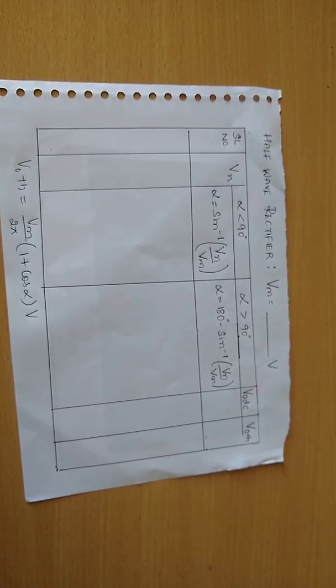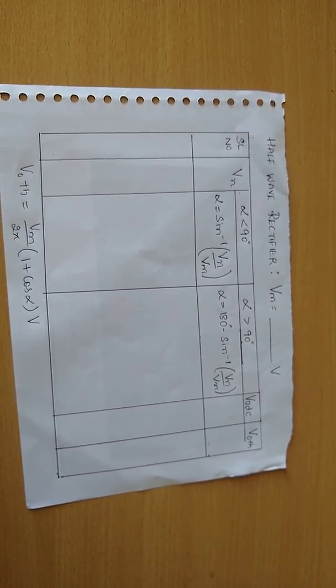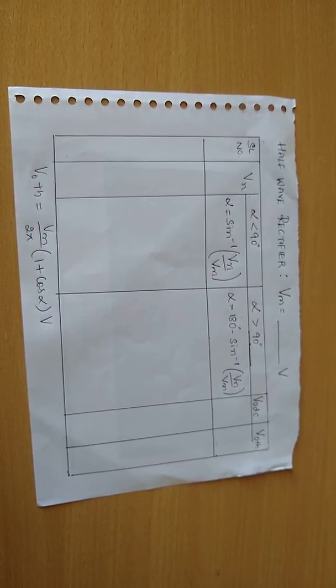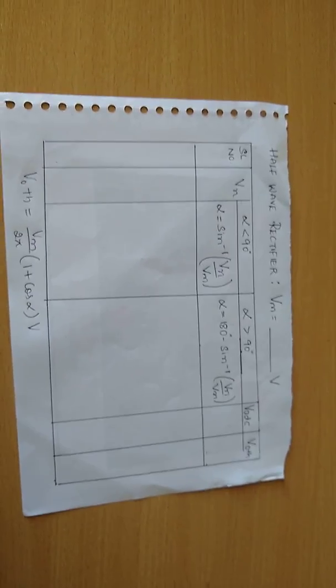Finally, compare the practical output voltage with the theoretical output voltage. Theoretical formula for V0 TH equals Vm by 2 pi into 1 plus cos alpha volts.